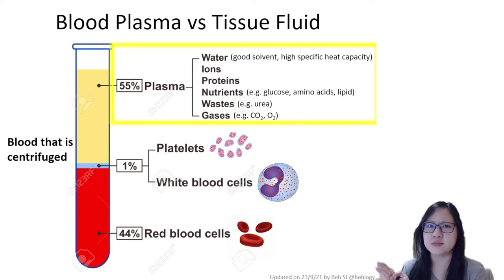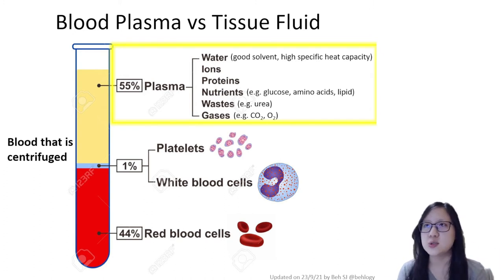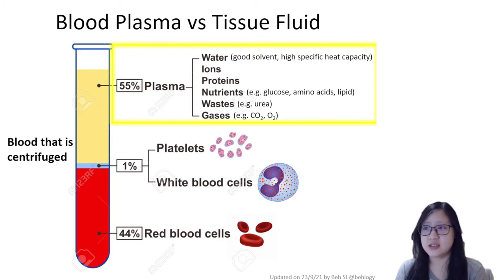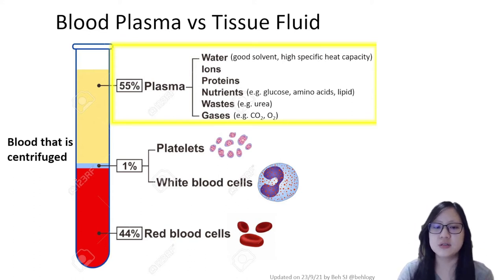What is blood plasma exactly? If you take a sample of your blood right now and centrifuge it — centrifuge means you spin it at really high speeds — what will happen is the denser substances are going to sink and the ones that are not so dense will be at the top. So it separates your blood into separate sections.